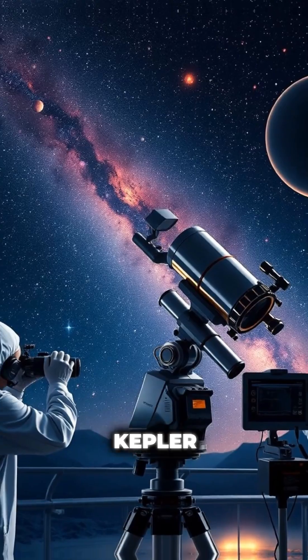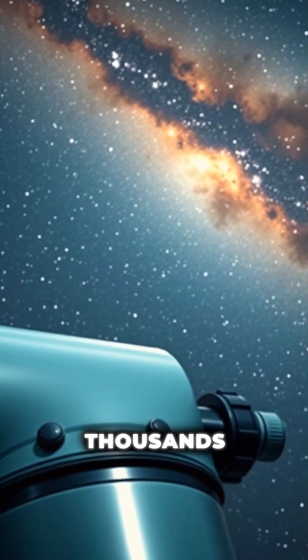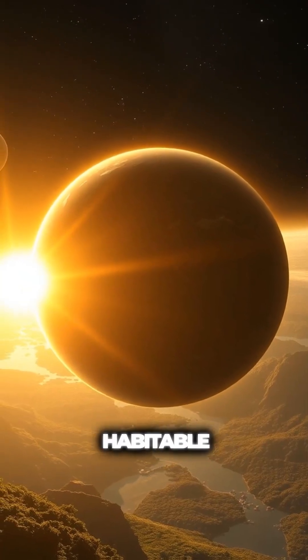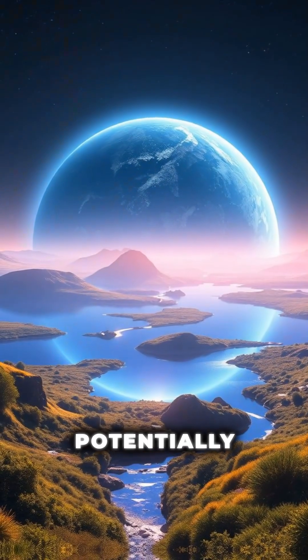Space telescopes like Kepler and TESS have been pivotal in finding thousands of exoplanets using these techniques. Some of these worlds are located in their star's habitable zone, where conditions might be right for liquid water and potentially life.